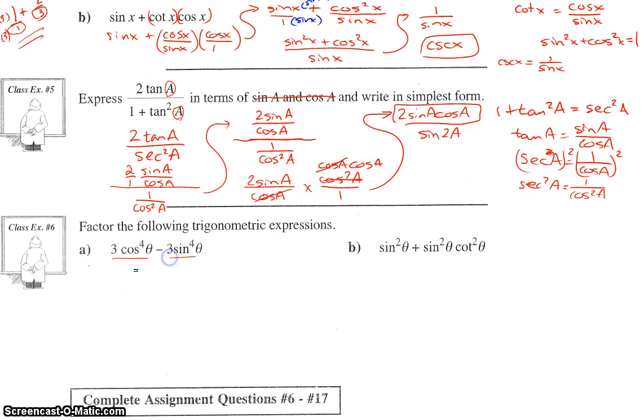First step in factoring is greatest common factor. What do you notice from these two things? We can take out a three. I'm going to switch to blue. Take out a three. We have then cos⁴θ minus, and we divide three out of the second term, sin⁴θ.